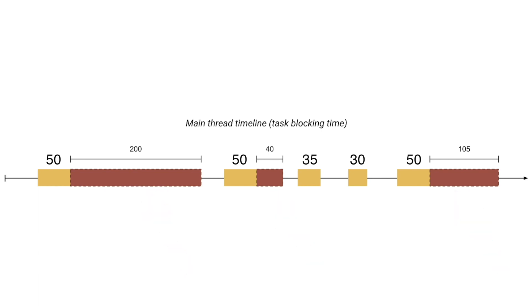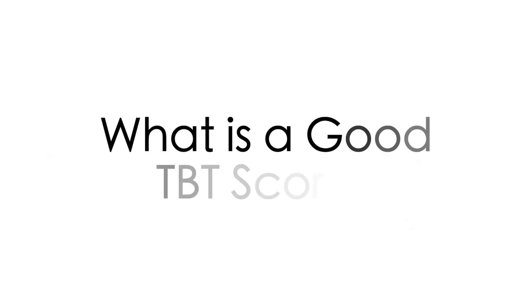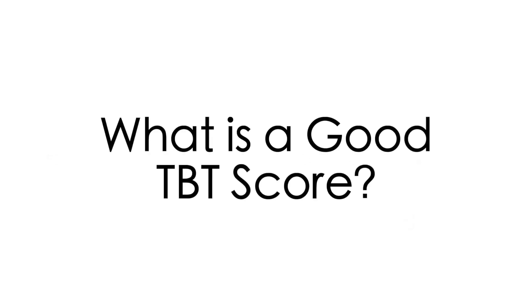Once we add the blocking time of all the tasks, we'll get the Total Blocking Time. In this case, when we add the blocking time of all three tasks, the Total Blocking Time is 345 milliseconds.